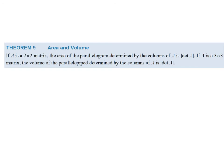The last application in this section is to area and volume. If A is a 2-by-2 matrix, the area of the parallelogram determined by the columns of A is the absolute value of its determinant. If A is 3-by-3, then it's the volume of a parallelepiped — like a parallelogram but in three dimensions — determined by the columns of A, and that equals the absolute value of its determinant. So the determinant has practical applications to area and volume of parallelograms.